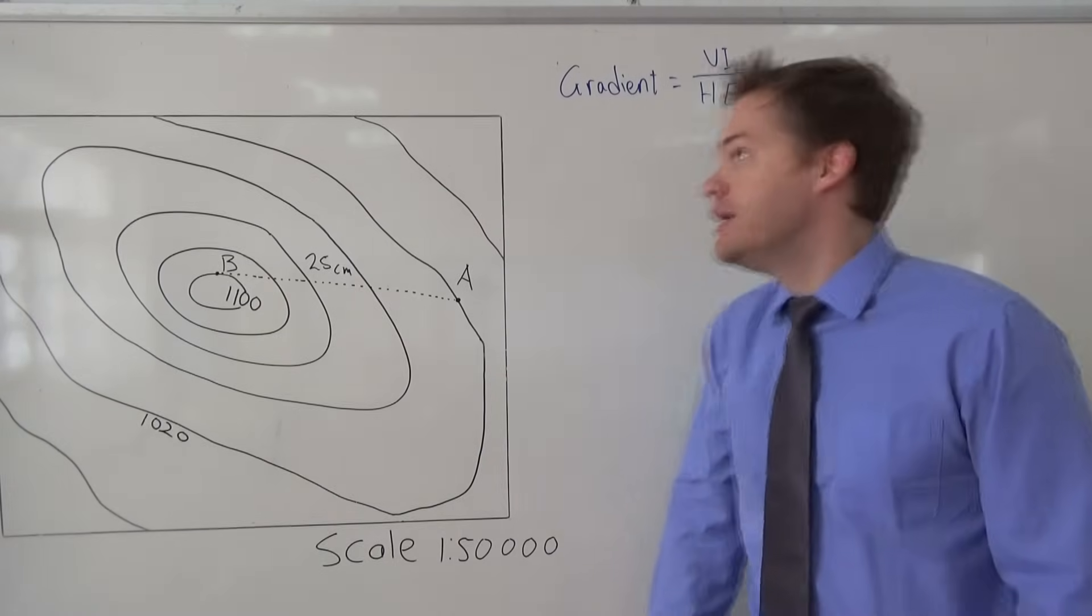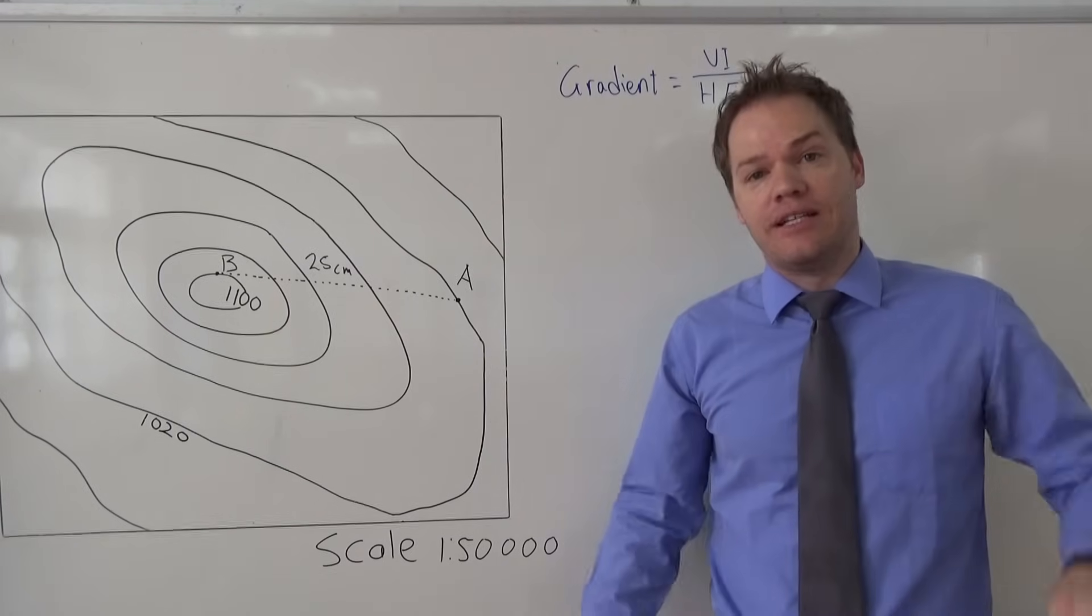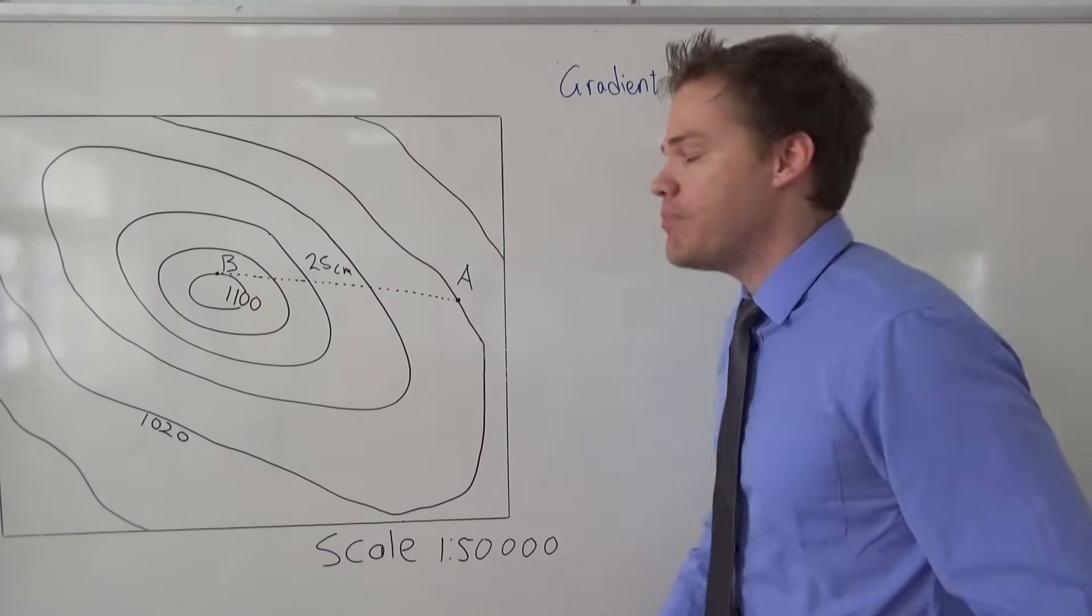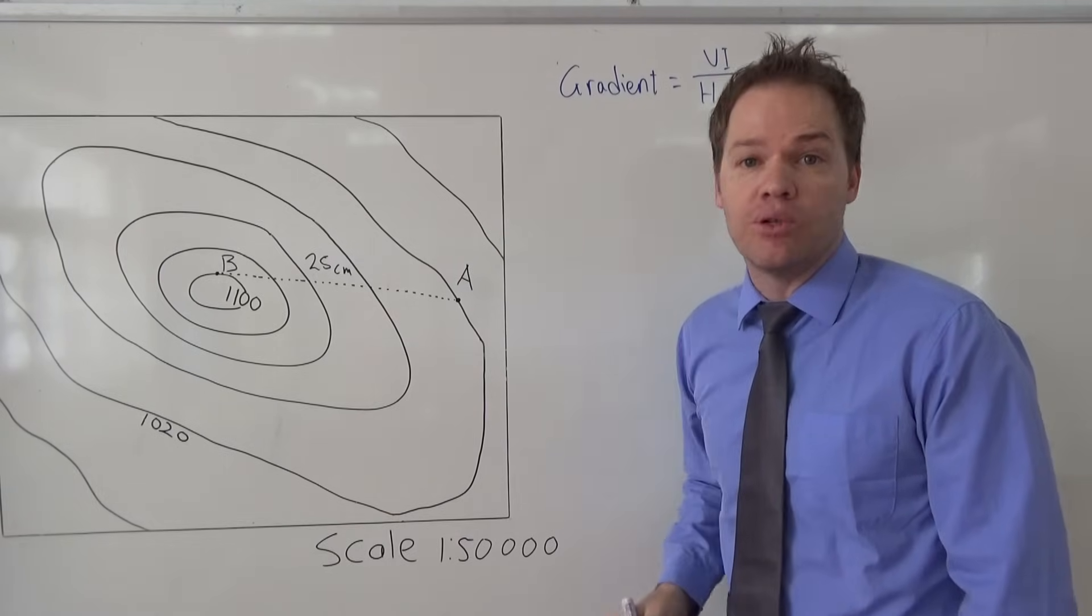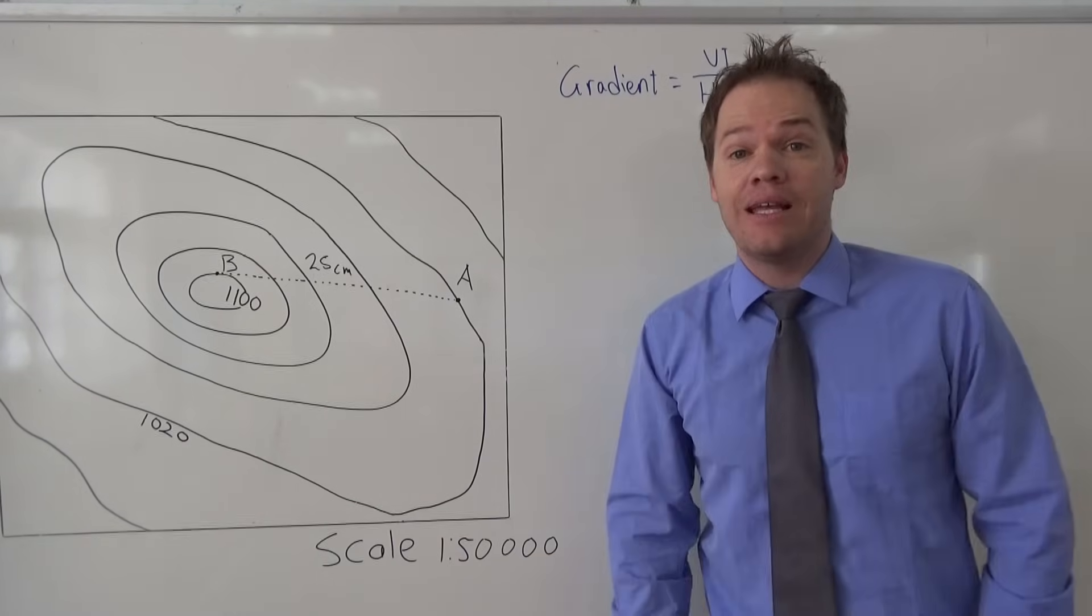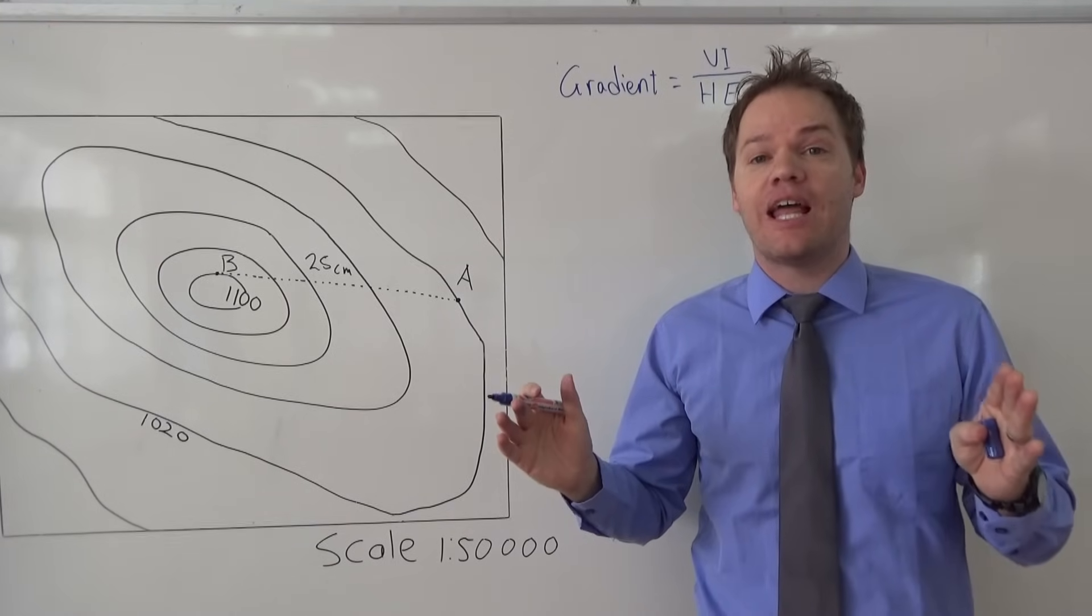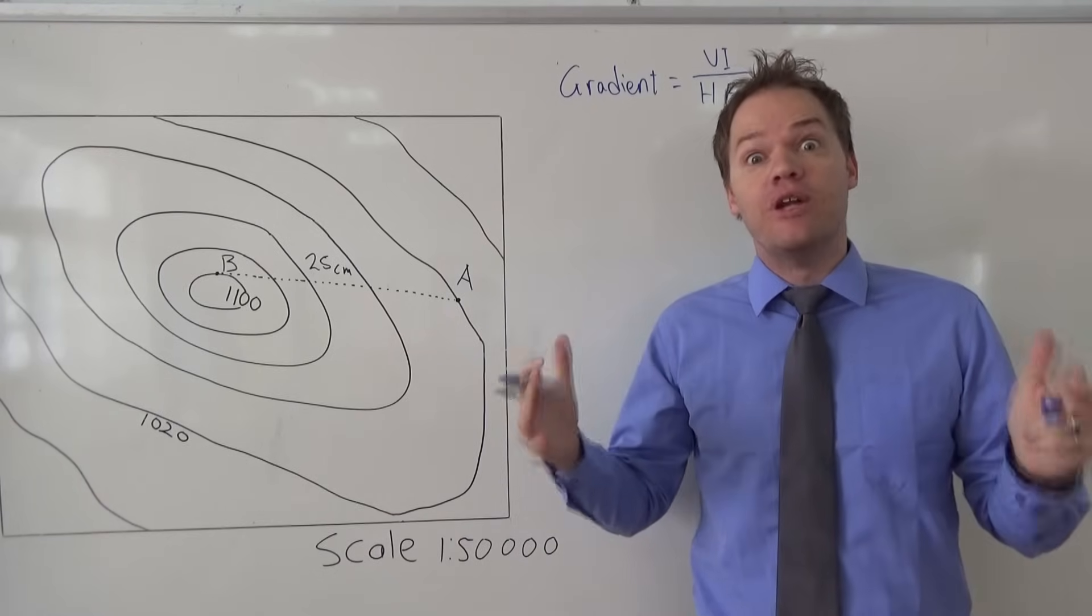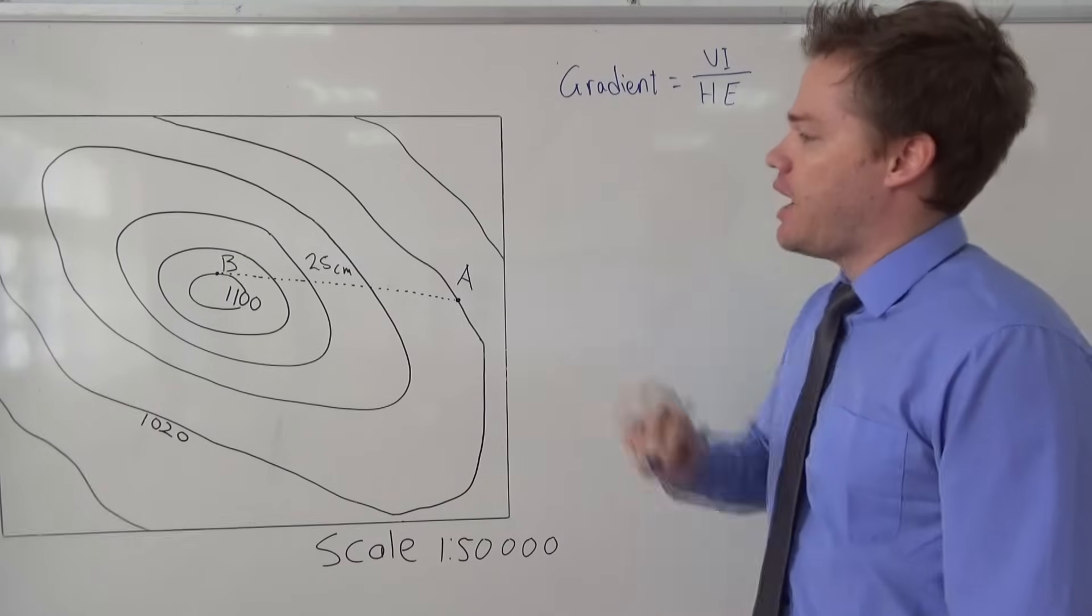The vertical interval is the difference in height between those two locations on the map, so it's a simple calculation like 200 minus 140 or something like that. And the horizontal equivalent is simply the distance between those two places. So if you have 25 centimeters on your map, then you're going to calculate the real distance between those two places.